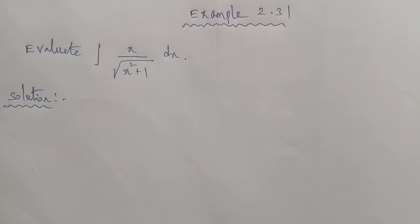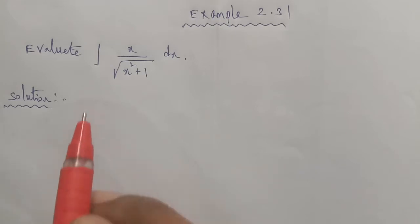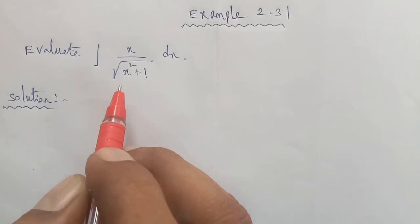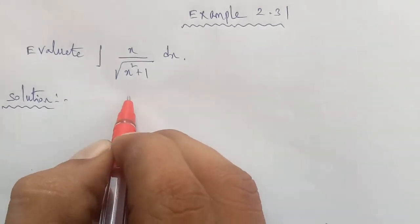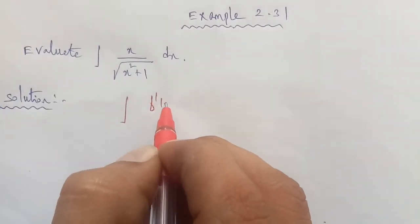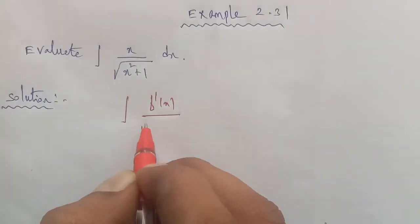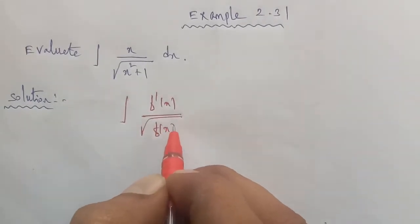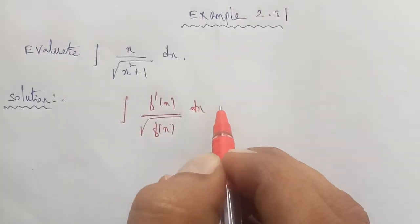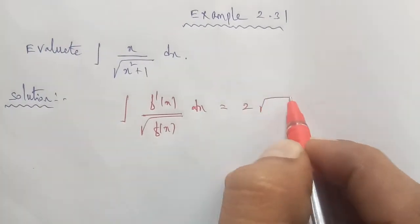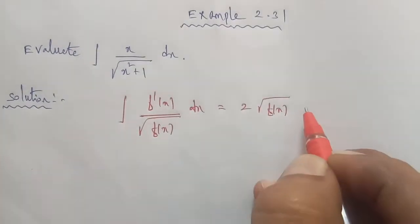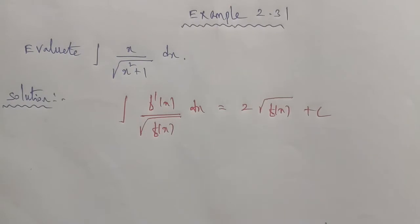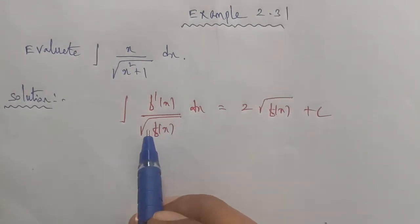Hi students, I am Gopinath. 12th business math exam — problem 2.31: evaluate the integral of x divided by square root of x squared plus 1 dx. The formula we use here is: integration of f'(x) divided by square root of f(x) dx is equal to 2 times square root of f(x) plus c.